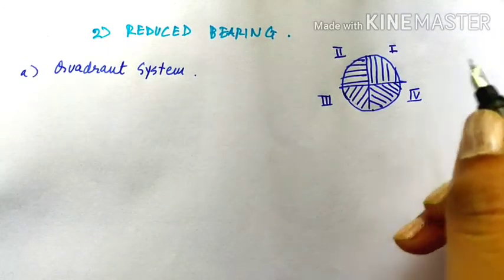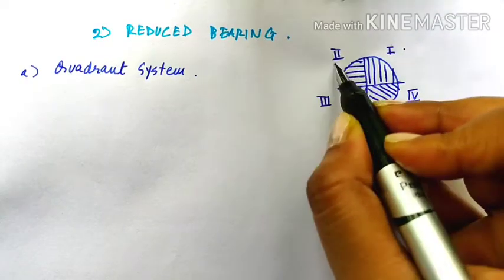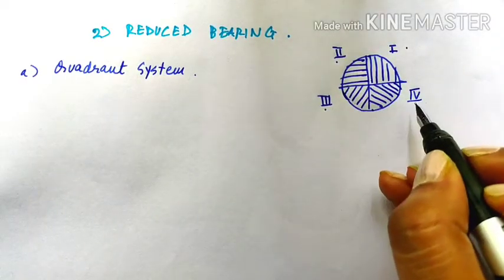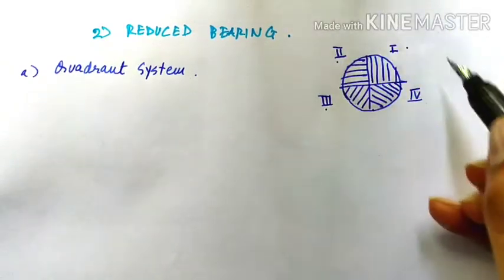So, we will call this part first quadrant, this part second quadrant, third quadrant and fourth quadrant. No confusion. So, this is a quadrant system that they follow.